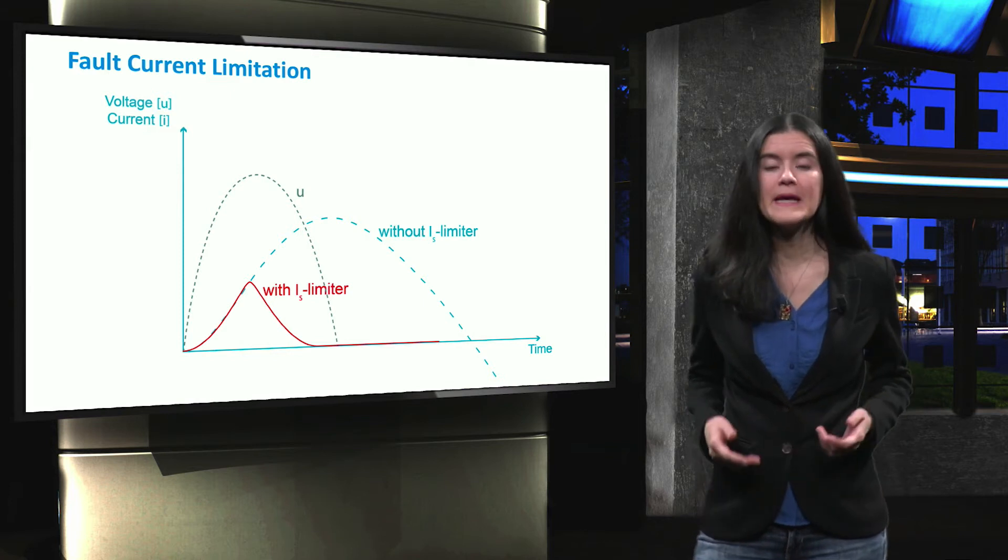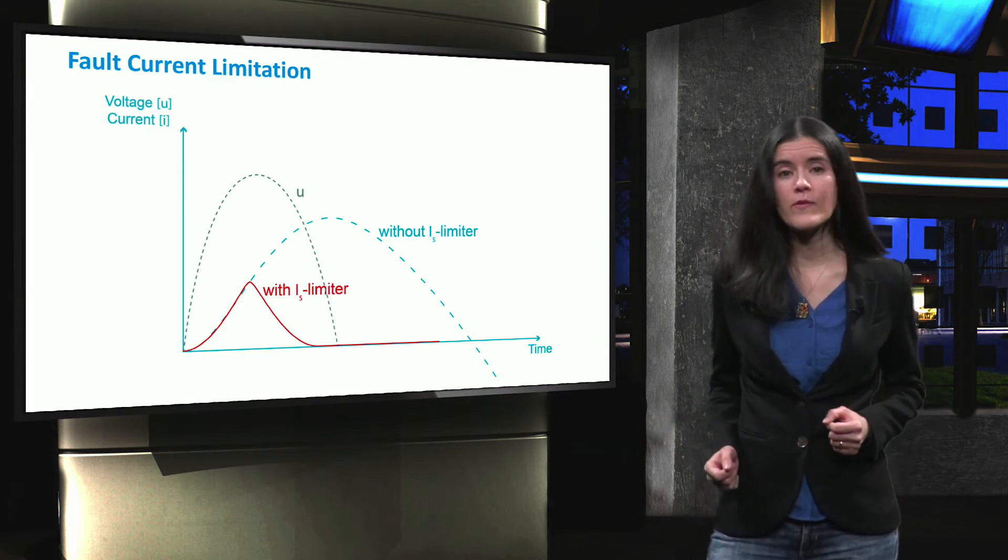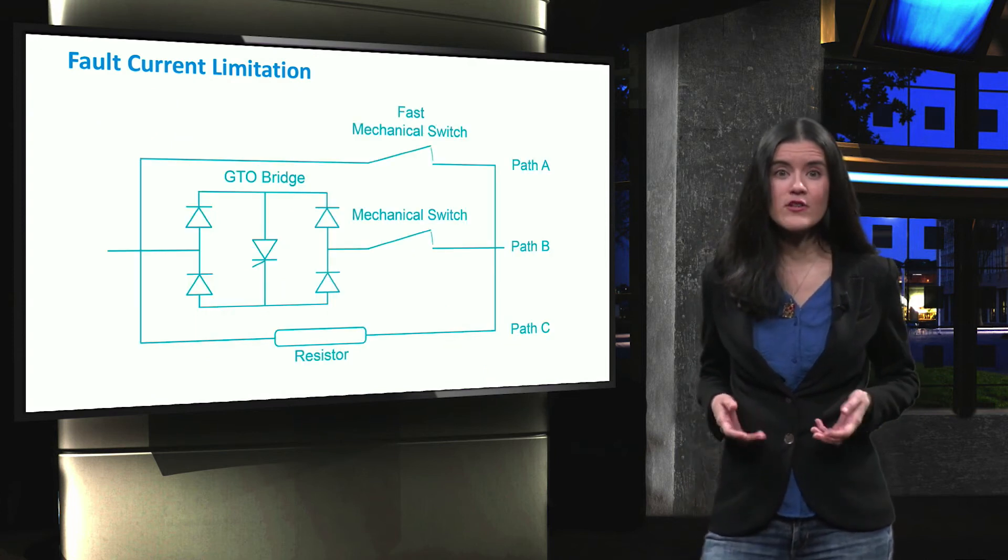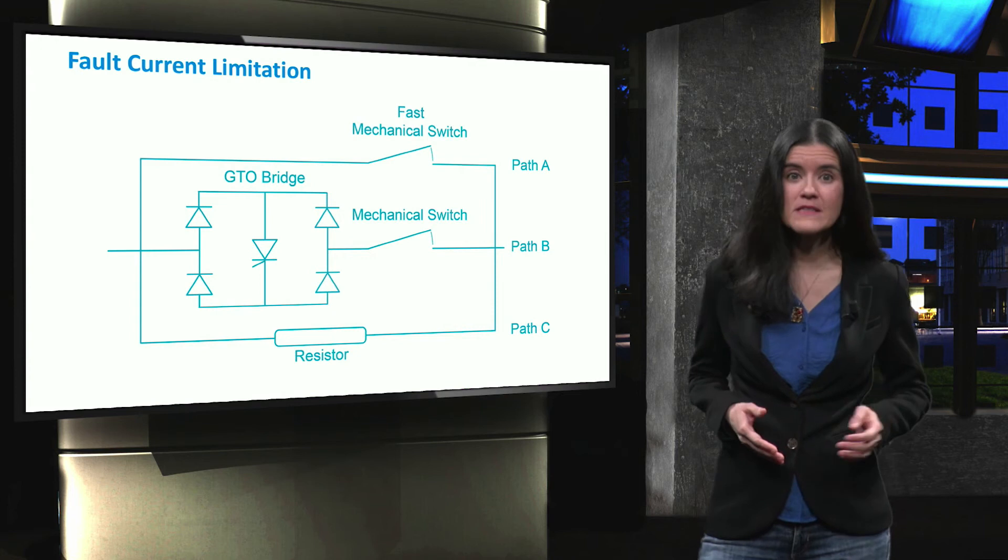A fault current limiter can be implemented in many different ways, such as the fuse installed in the machine. A fault current limitation can be implemented in both passive and active manner.